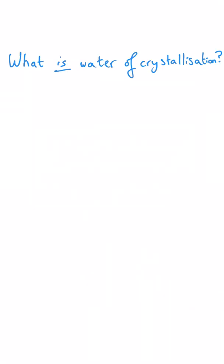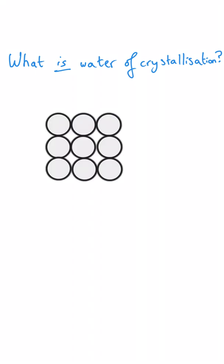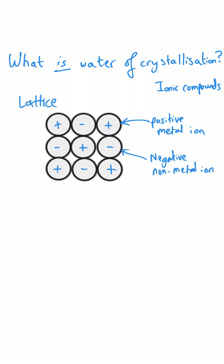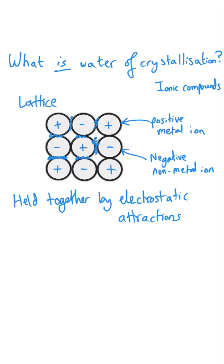Before we have a look at the question, just a quick moment to explain what water of crystallisation is. It's what you find in ionic crystals, so that substance is made of a positive metal ion connected with negative non-metal ions, held together by electrostatic attractions. This water of crystallisation is water that has been trapped within the framework of this ionic lattice during the crystallisation process.